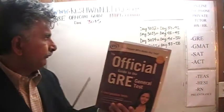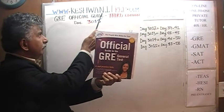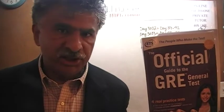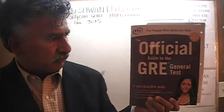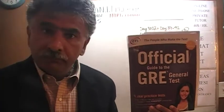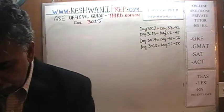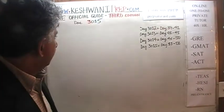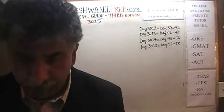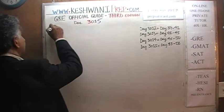Hello, my name is Keshwani, that's K-E-S-H-W-A-N-I. We are here because we want to prepare for the GRE. We have been solving math problems out of this book, the Official Guide to the GRE, the third edition. If you do not own this book already, purchase one immediately — you are going to need it. Today is our lesson number 315, and we are on page number 165.